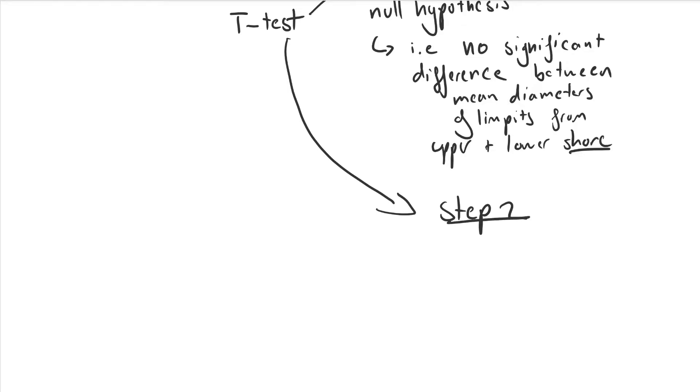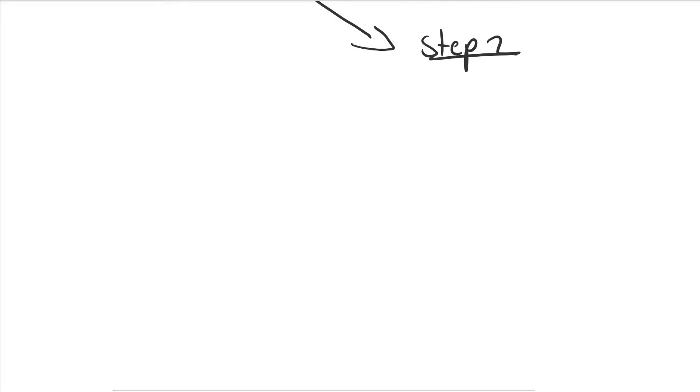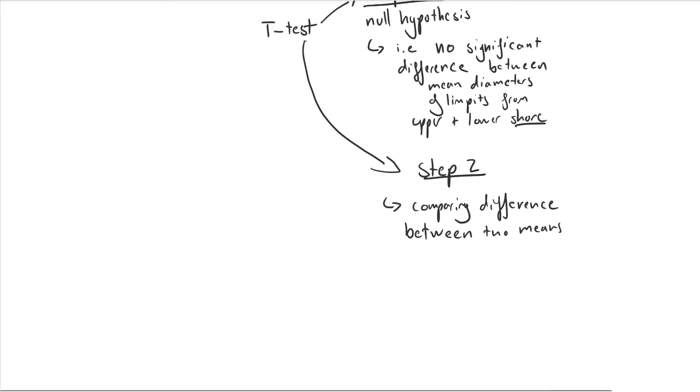So in step two you need to choose the correct statistical test and then justify why you chose that test. As the diameter is a continuous variable and the difference between the two means is being compared in this investigation, we are using the t-test because we're comparing two means and seeing if there's a difference between a factor that affects those two means, for example the upper or lower shore.